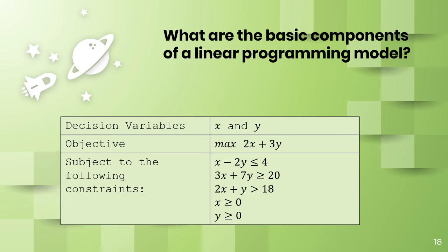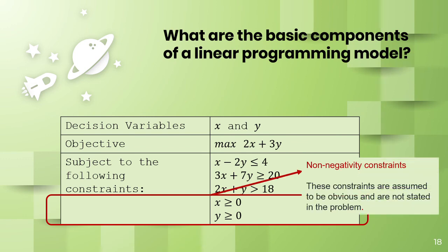And then for the last two inequalities, we have the non-negativity constraints. These constraints are assumed to be obvious and are usually not stated in the problem. This means that our x and y values cannot be negative.